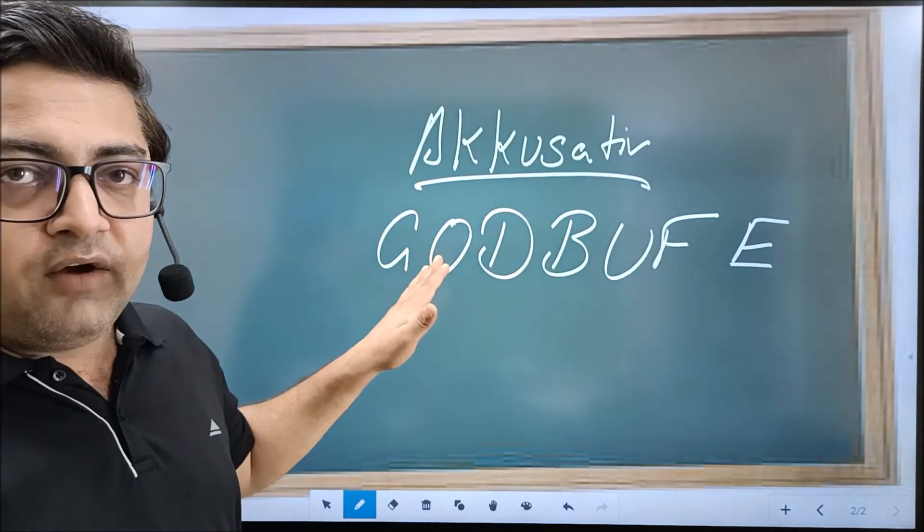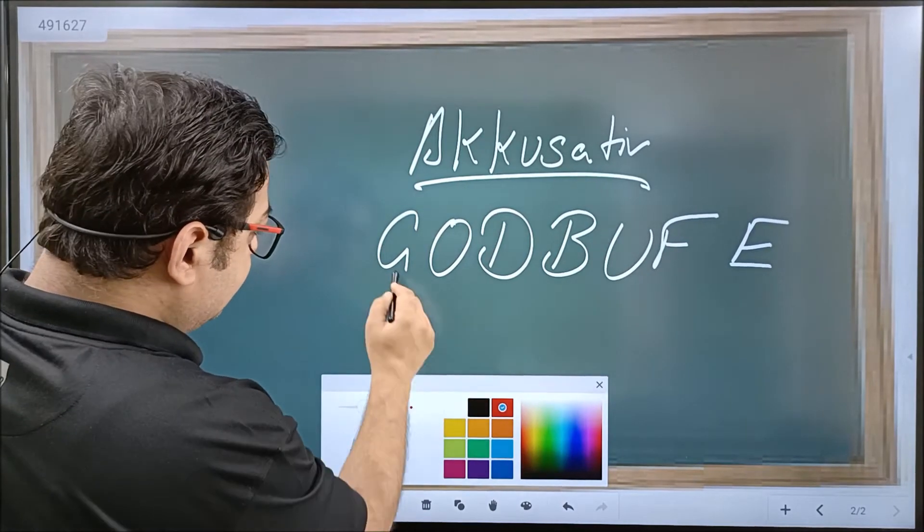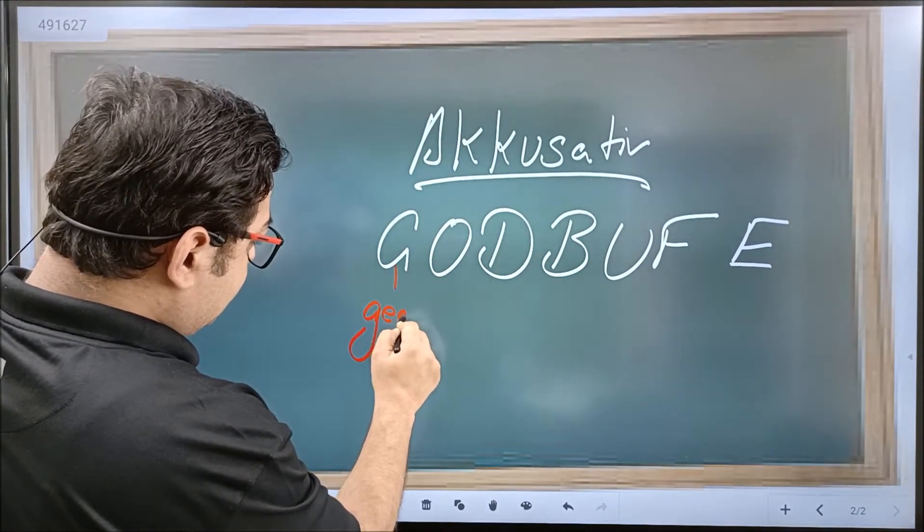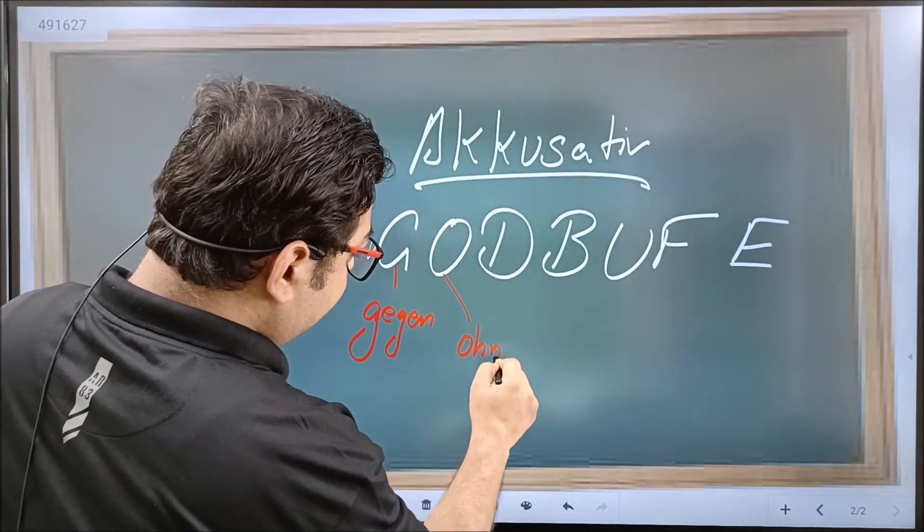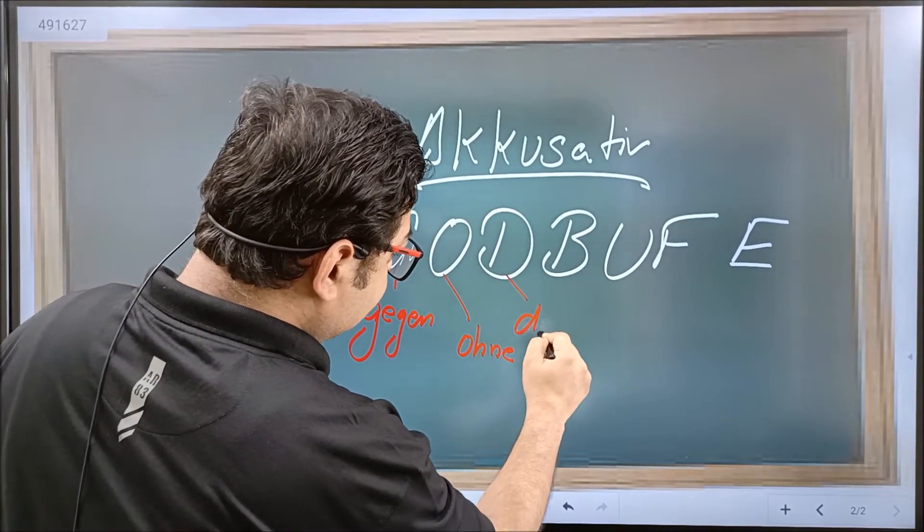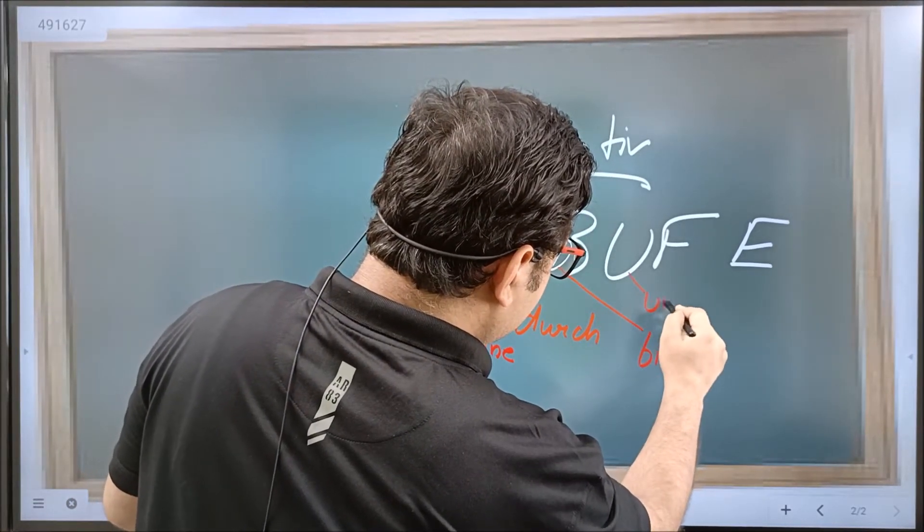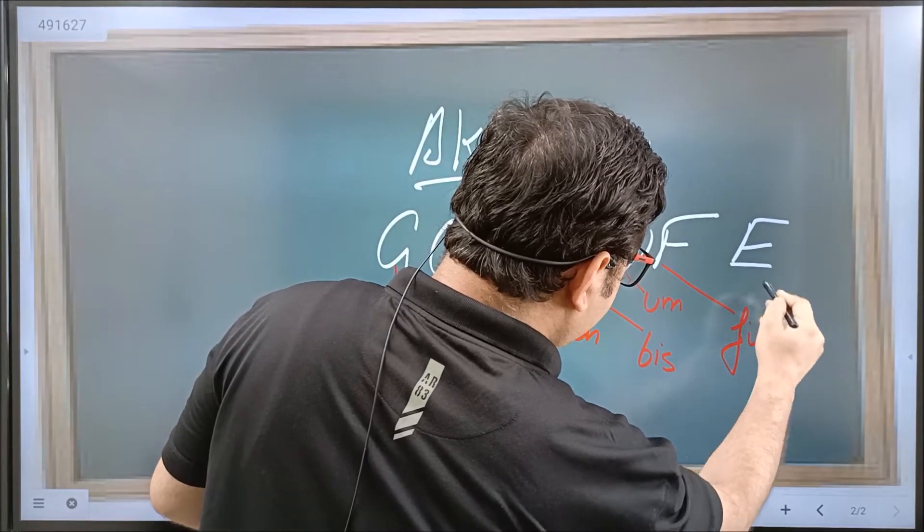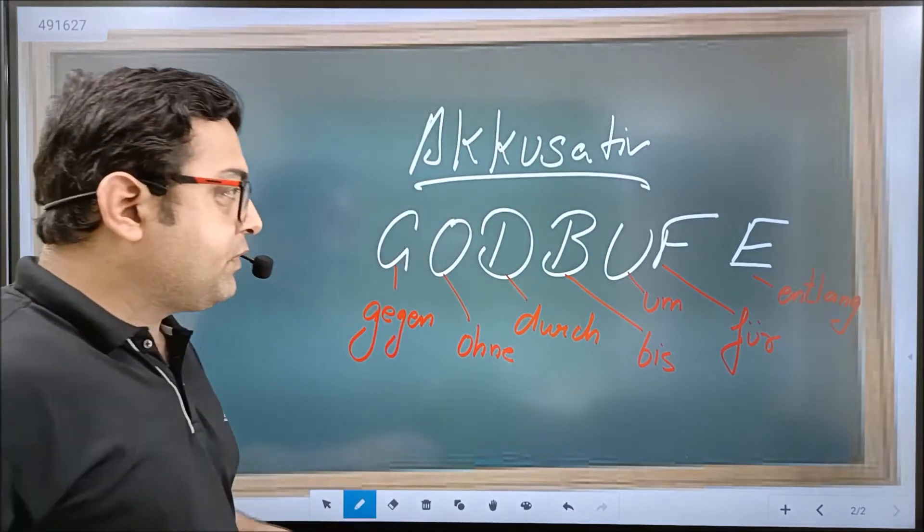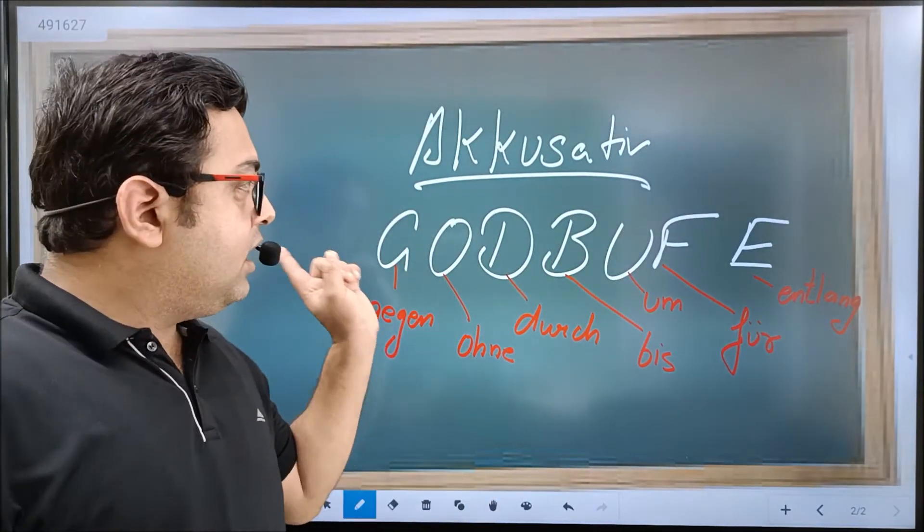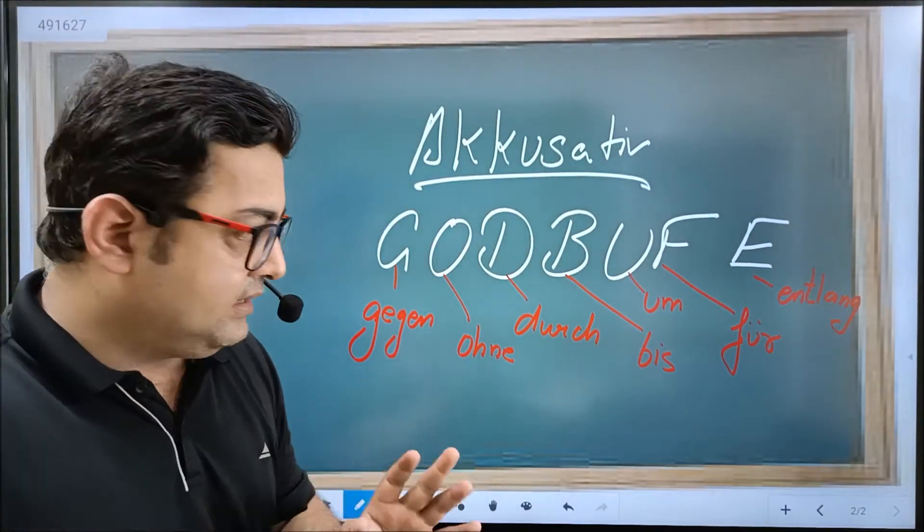What does G stand for? G is gegen. O stands for ohne. D stands for durch. B is bis. F is für. U is um. And E is entlang. This is how you can learn accusative prepositions.